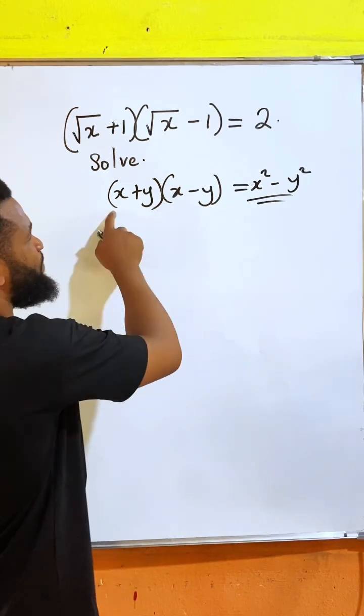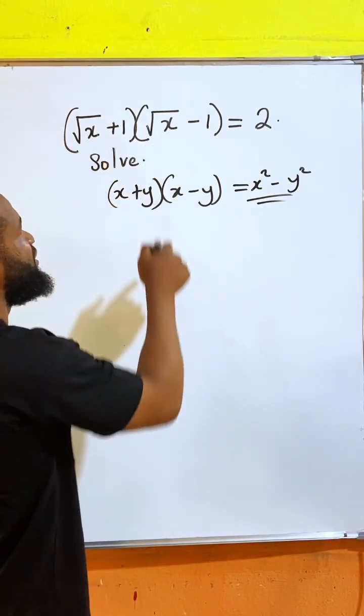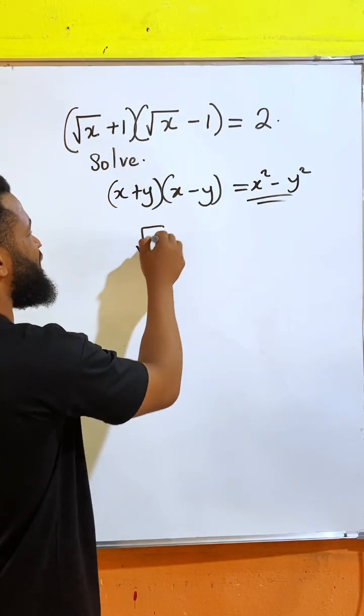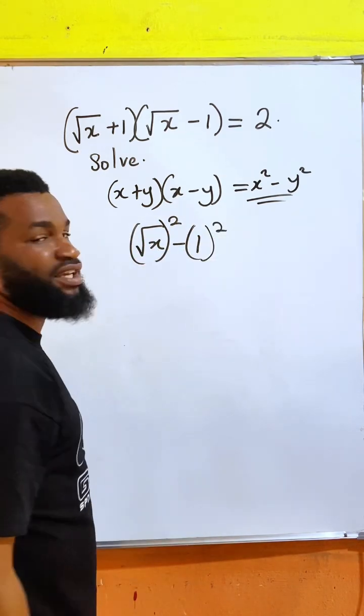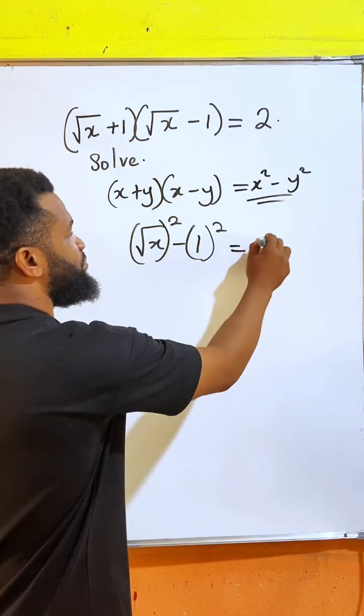The same thing I'm going to do, I'm going to apply this principle on this. That simply means I'm going to have root x minus 1, this is squaring, and this is being squared as well. And everything is going to be equal to 2.